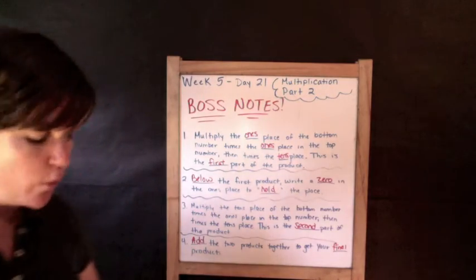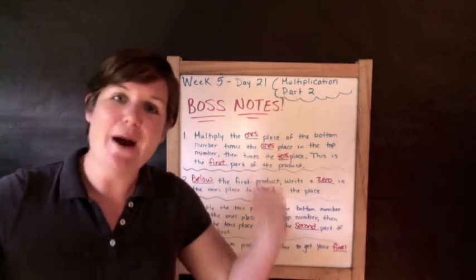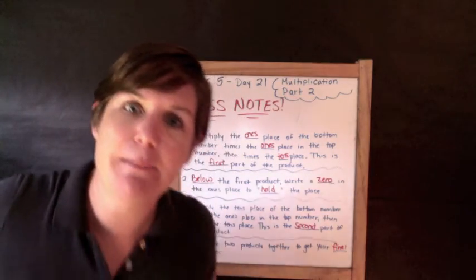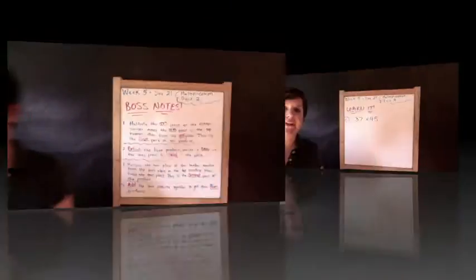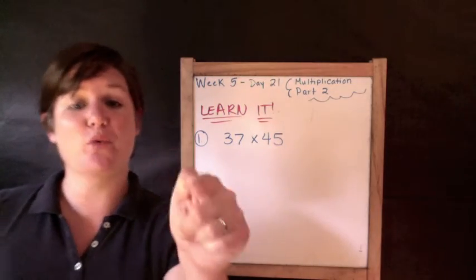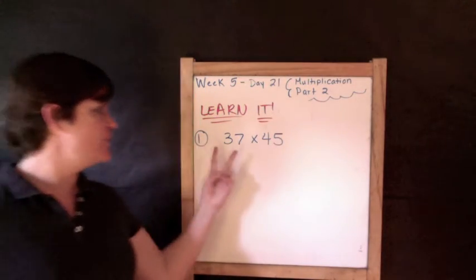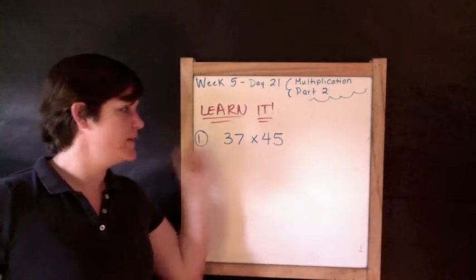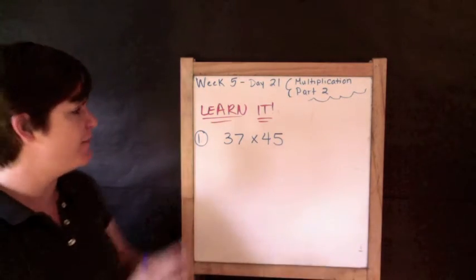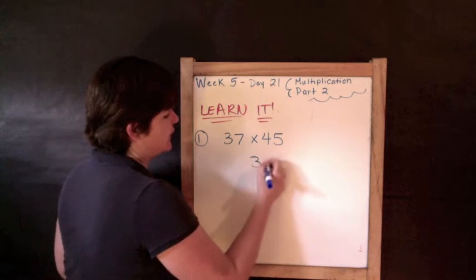It's very wordy, but it will make more sense right now because we're about to learn it. Go to the learn it section. So let's put those boss notes into practice. We've got 2 digits times 2 digits — it's 37 times 45, but we don't want to write it like that. We're going to write it vertically.